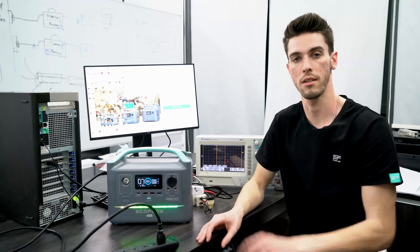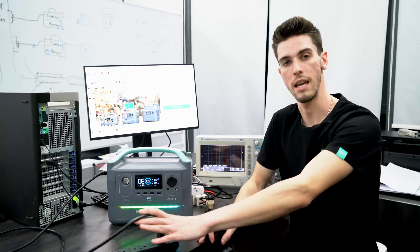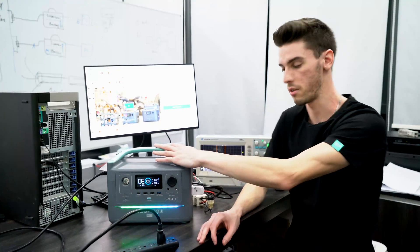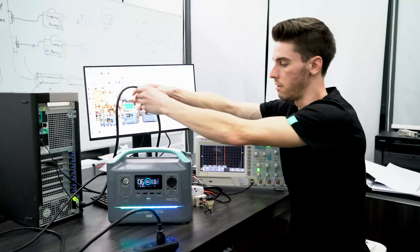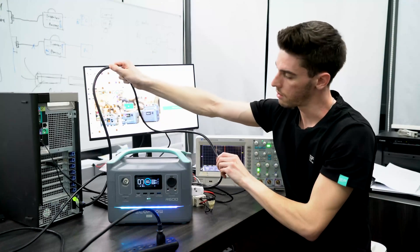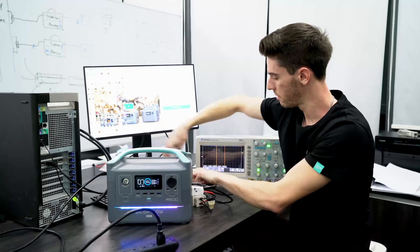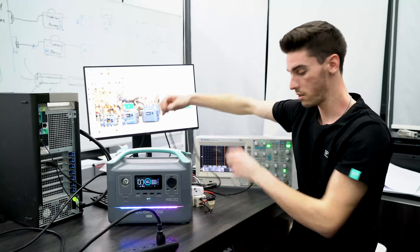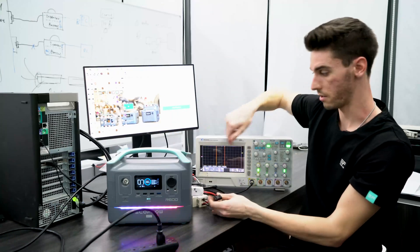Okay, let's go through this UPS configuration. Here you can see AC power going into the R600. This is the cable going to the computer, cable going to the monitor, and the cable going to the oscilloscope.